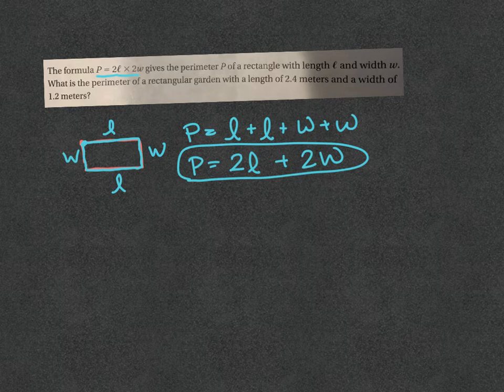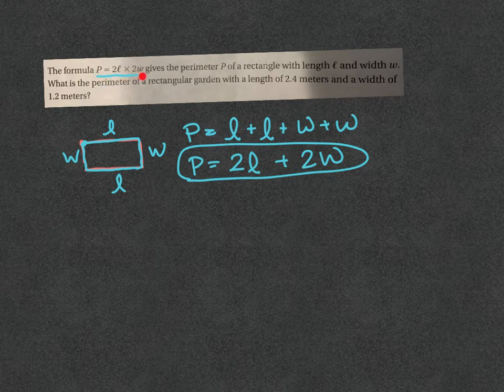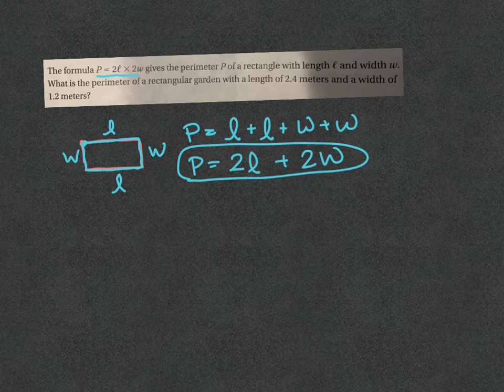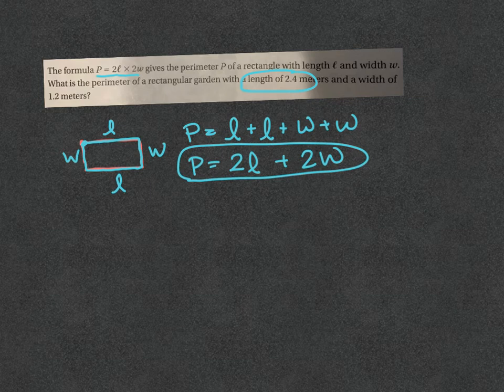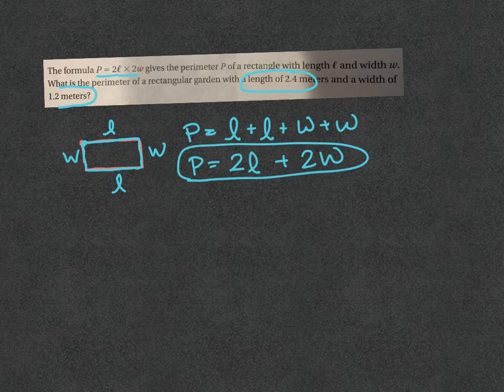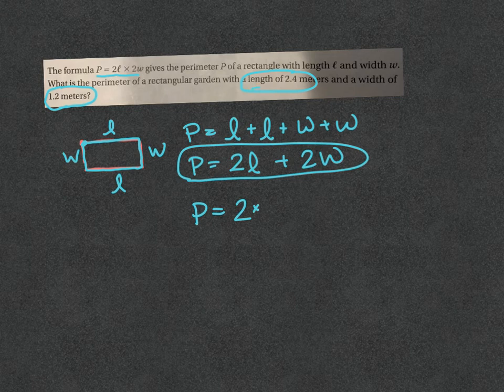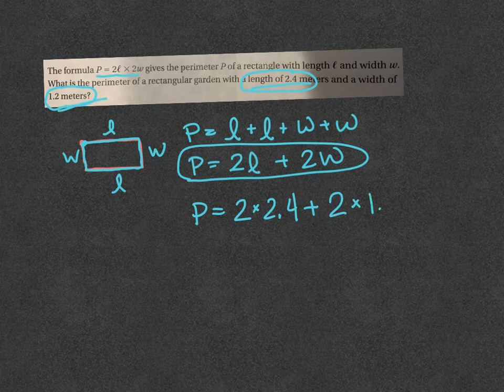So we have this problem: the formula P equals 2L plus 2W gives the perimeter of a rectangle with length L and width W. What's the perimeter of a rectangular garden with a length of 2.4 meters and a width of 1.2 meters? Now I know both values, so I'm going to plug them into the formula: 2 times 2.4 plus 2 times 1.2.